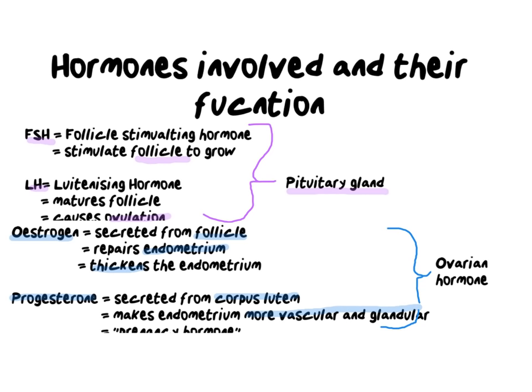In other words, progesterone makes the endometrium more like a sponge — a softer setting that allows the egg cell to settle in and grow into a fetus. We also call progesterone the pregnancy hormone, because if you do a pregnancy test, this is the hormone you are looking for to determine whether or not you are pregnant.